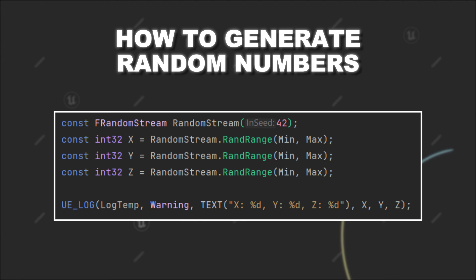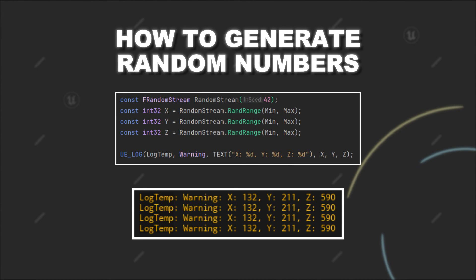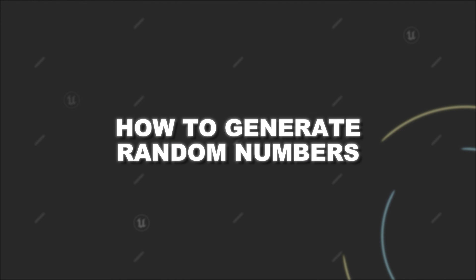When we now replace our previous setup of fMathRandRange and execute the game multiple times, you can see that the sequence of numbers is identical across the executions. Therefore, if you want a consistent random number generation that can be replicated across different playthroughs of your game, you should use fRandomStream.